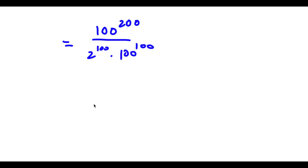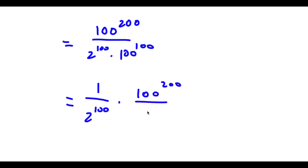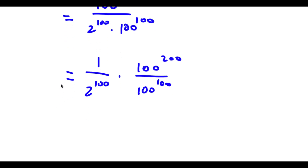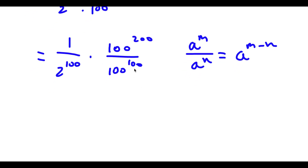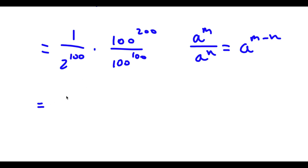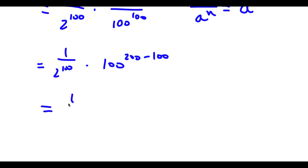Now, this is the same thing as 1 over 2 to the power of 100 times 100 to the power of 200 over 100 to the power of 100, because 2 to the power of 100 is in our denominator, and anything in the denominator is the same thing as 1 over that number. Now, if I have something in the form a to the power of m over a to the power of n, this is equal to a to the power of m minus n. So in this case, I have 100 to the power of 200 over 100 to the power of 100, which equals 100 to the power of 200 minus 100. 200 minus 100 is equal to 100, so I have 1 over 2 to the power of 100 times 100 to the power of 100.